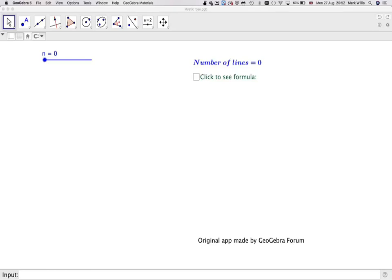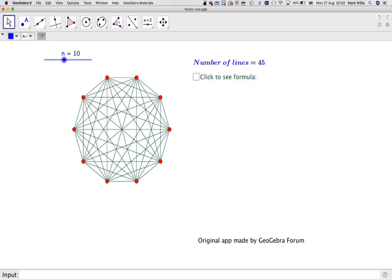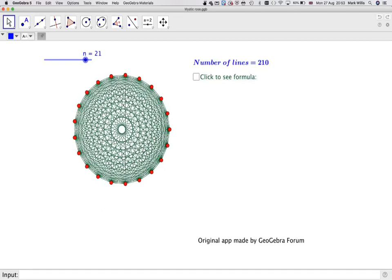So if we change N to 1, we've obviously got nothing there. Here we've just got one line, three lines, and you can see what happens. This is called a mystic rose and it looks quite beautiful.